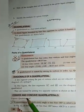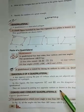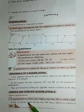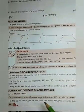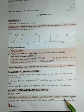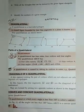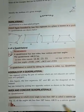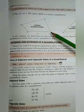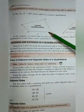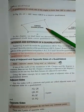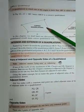Now, convex and concave quadrilaterals. What is a convex quadrilateral? A quadrilateral in which every angle is less than 180 degrees is called a convex quadrilateral. In figure 1, this is a convex quadrilateral because all angles are less than 180 degrees.